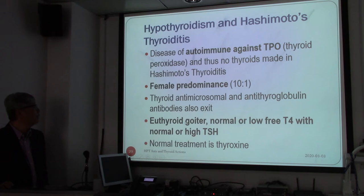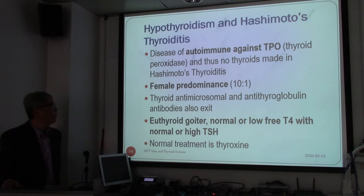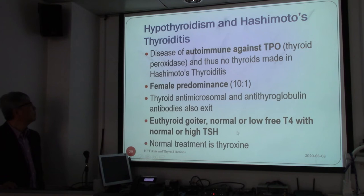We have euthyroid goiter — remember the term euthyroid means it's still in the middle, not hyper or hypo. For normal or low free T4 with normal to high TSH, that could be classified as hypothyroidism.